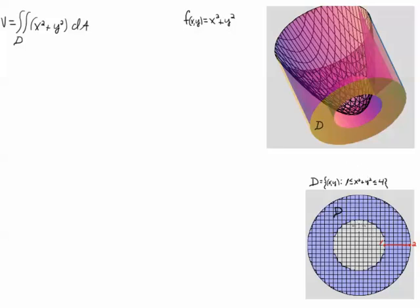So, to describe this region here, we have a radius between 1 and 2, and we're going to calculate the volume of this, underneath this surface and over this region, so this solid that you see here.